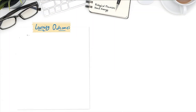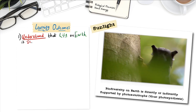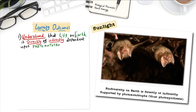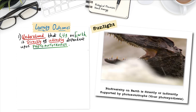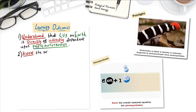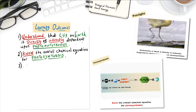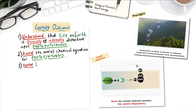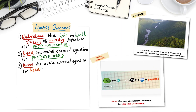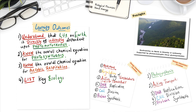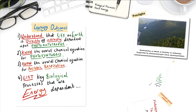Your learning outcomes this lesson are: 1. Understand that life on earth is directly or indirectly dependent upon photoautotrophs. 2. Know the overall chemical equation for photosynthesis. 3. Know the overall chemical equation for aerobic respiration. 4. List key biological processes that are energy dependent.